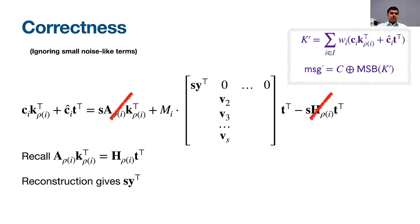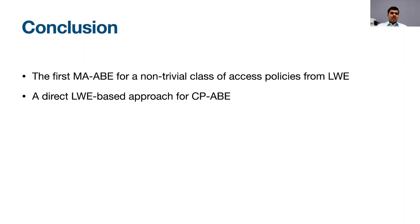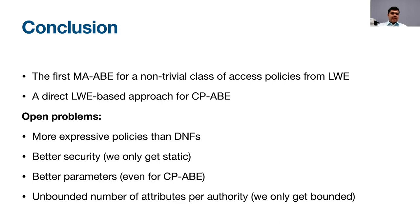Unfortunately I don't have time to cover the security proof or the MA-ABE scheme in detail — please see our full paper available on ePrint. In conclusion, we present the first MA-ABE scheme from the LWE assumption for a non-trivial class of access policies, and also give a direct approach toward constructing a CP-ABE scheme under LWE. Open problems include: Can we construct MA-ABE from LWE for more expressive access policies beyond DNFs? Can we achieve stronger security beyond static security? Can we get better parameters — smaller ciphertext and secret key sizes — since currently all sizes scale with the worst-case policy size bound? And can we allow an unbounded number of attributes per authority, rather than the bounded number currently supported? Thank you very much for your attention.